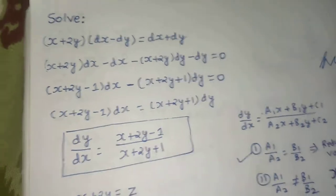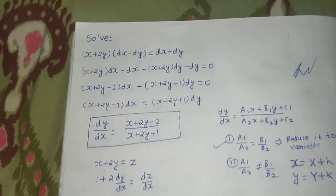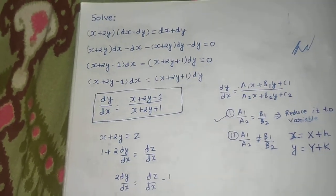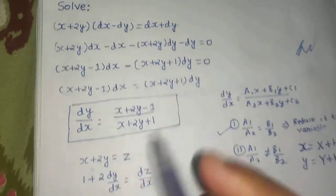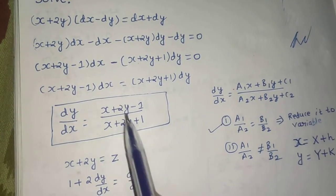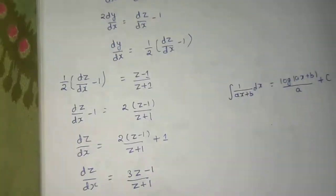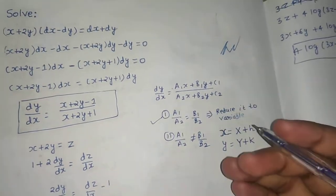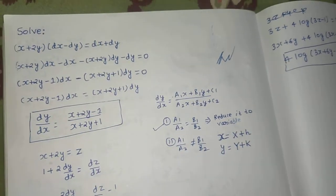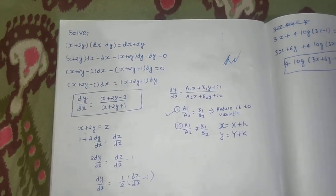The final answer is 4·log|3x plus 6y minus 1| equals 6x minus 6y plus A. More than the answer, focus on the method: when the same expression appears in both numerator and denominator, assume it as a new variable to convert to variable separable form. Case 2, where a1/a2 is not equal to b1/b2, will be covered in another video. I hope you learned something — thanks and have a nice day.